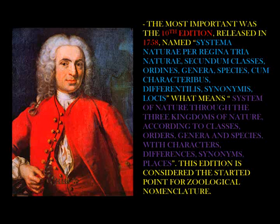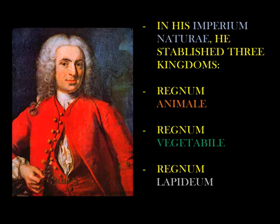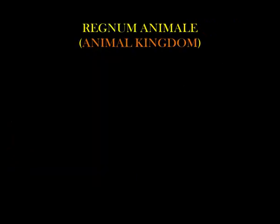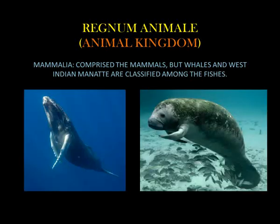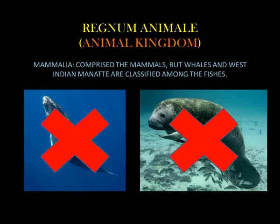Let's see how Linnaeus made his classification. In his Imperium Naturae, he established three kingdoms: Regnum Animale, Regnum Vegetabile, and Regnum Lapideum. Today, it lives on in the popular mind when we ask: is it animal, vegetable, or mineral? In the animal kingdom, Mammalia comprised the mammals, but whales and the West Indian manatee were classified among the fish.